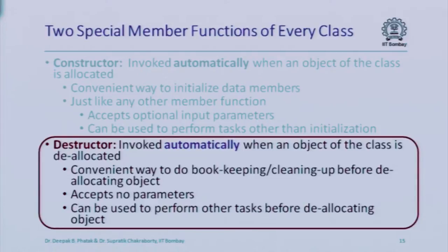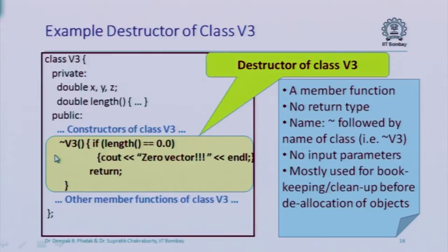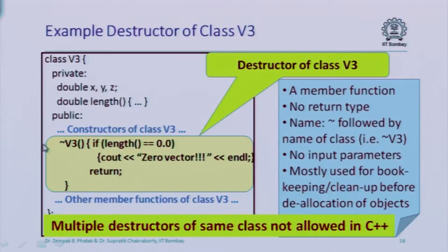Similarly, a destructor is invoked just before the object is deallocated. The convention is that we put a tilde before the name of the class, and that becomes a destructor function, defined within the class. It does not take any parameters and does not have any return type. You cannot have multiple destructors of the same class because all of them would have the same name and none would take any argument, making it impossible to determine which one to call.